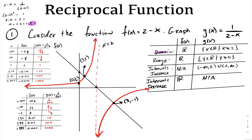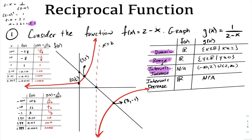Summarizing in a table: the domain of f(x) was all real numbers, whereas the domain of the reciprocal function is all real numbers excluding 2. The range of f(x) was all real numbers, and the range of the reciprocal function is all real numbers excluding 0 — we have a horizontal asymptote at 0. f(x) was never increasing but was continuously decreasing, whereas the reciprocal function is increasing everywhere on its domain and never decreasing.